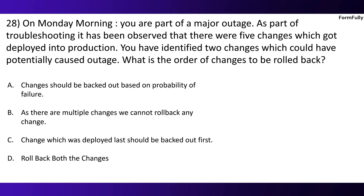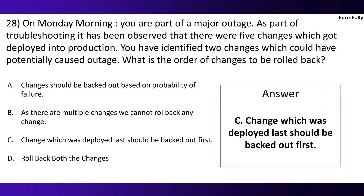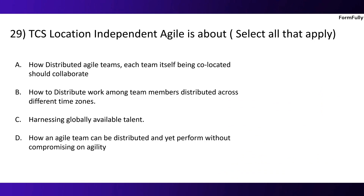Question 28. On Monday morning, you are part of a major outage. As part of troubleshooting, it has been observed that five changes were deployed into production. You have identified two changes which could have potentially caused the outage. What is the order of changes to be rolled back? Option A: Changes should be backed out based on probability of failure. Option B: As there are multiple changes, we cannot roll back any change. Option C: The change which was deployed last should be backed out first. Option D: Roll back both the changes. The correct option is C — the change which was deployed last should be backed out first.